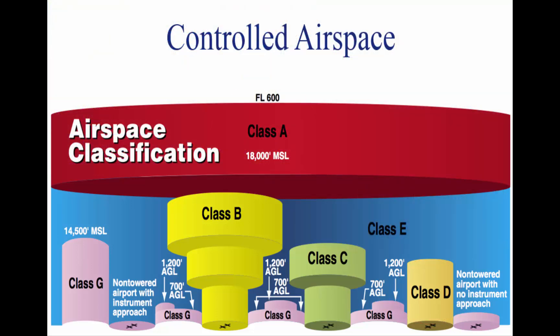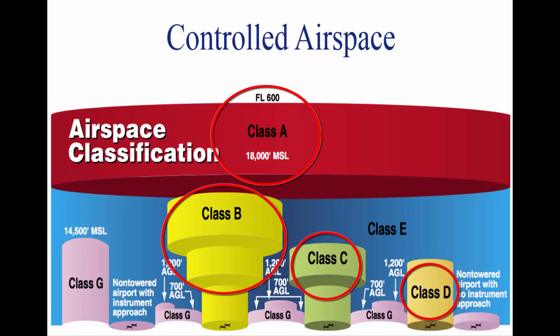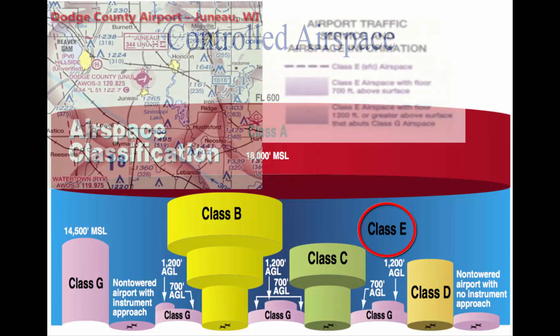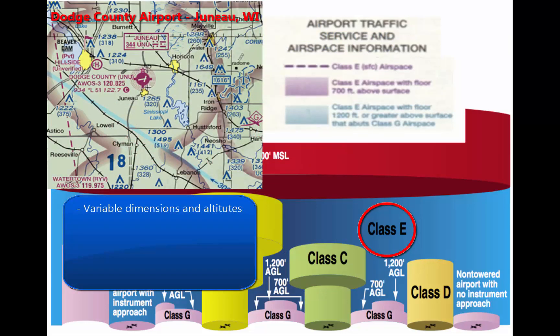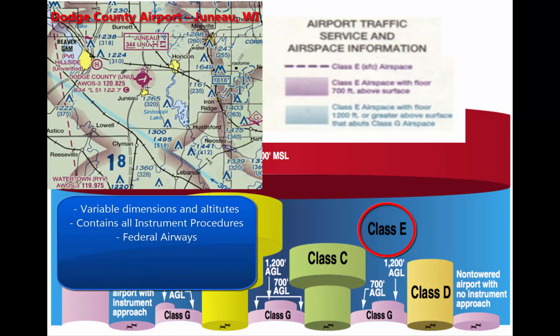If the airspace is not A, B, C, or D, but it is still controlled, then it is Class E airspace. Class E airspace extends upward from either the surface or a designated altitude to the overlying or adjacent controlled airspace. When given a surface area, it is meant to contain all instrument procedures. Also in this airspace are federal airways, which begin from either 700 or 1,200 feet off the ground and are used to transition to and from terminal areas or en route environments. Unless noted, Class E airspace begins over the United States at 14,000 feet above sea level up to 18,000 feet.